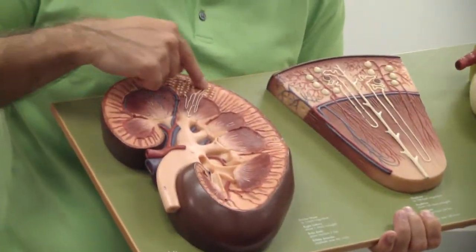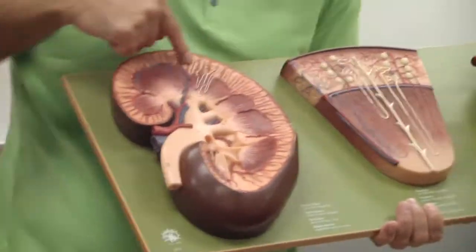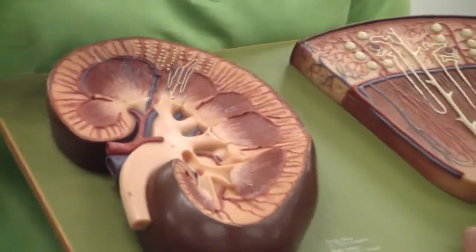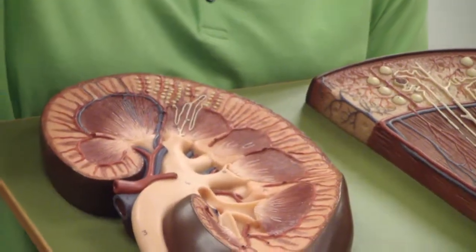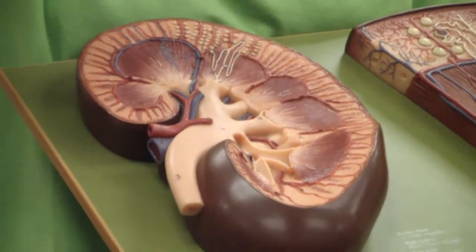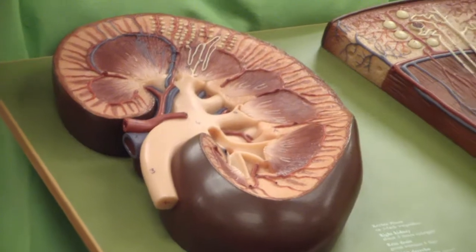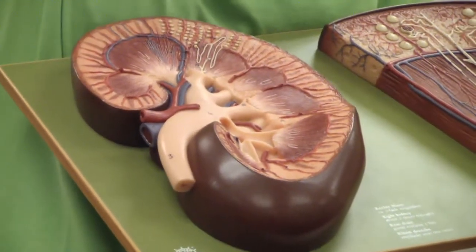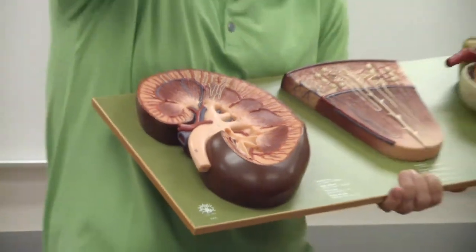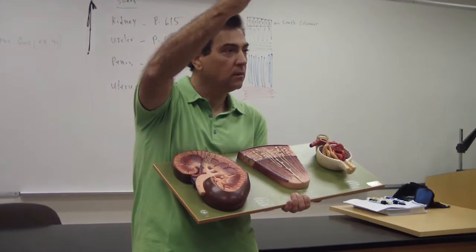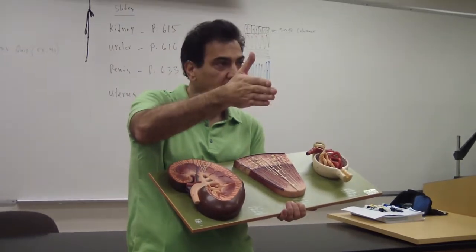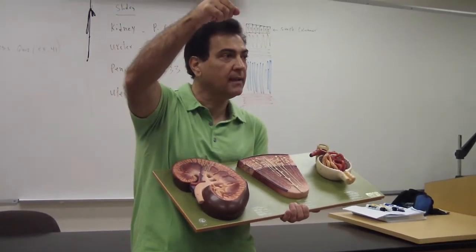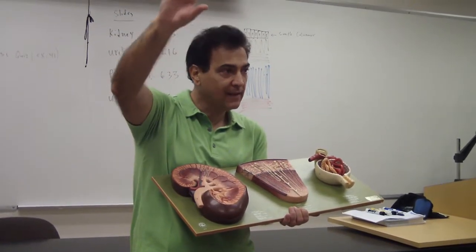Now, in the cortex, remember we said we have those nephrons — those microscopic structures — which are made up of Bowman's capsule, proximal, descending, ascending, and distal tubules.